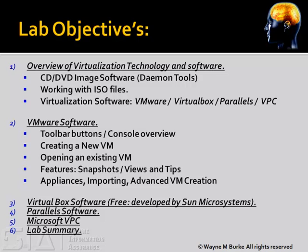We'll spend most of our time on VMware simply because of its popularity, and we'll be looking at features such as the toolbars, the buttons, what different console views we have, how we create new virtual machines, the difference between creating a new virtual machine and opening an existing VMware machine — otherwise known as an appliance — and then we'll look at features such as snapshots, the different views, and other tips available within VMware. We'll also cover more advanced features such as the different types of appliances we can utilize and how we import different types of virtualized machines, whether from a physical machine or from another image software package such as Acronis.